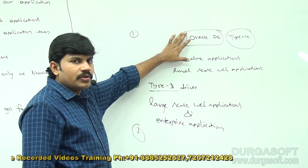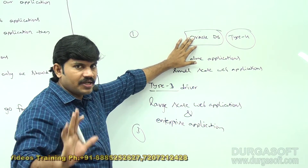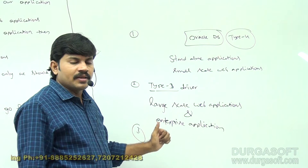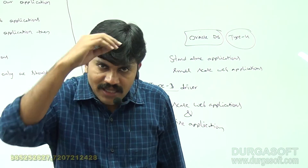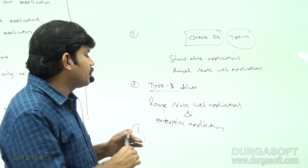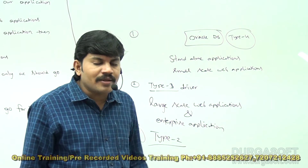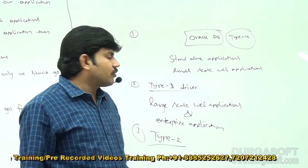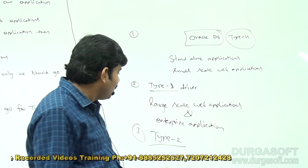So to summarize: if we are using only one type of database, type 4 driver is recommended. If we are using multiple databases, better to go for type 3 driver. Now suppose for my database neither type 3 nor type 4 driver is available — then we should automatically go for type 2 driver. We choose type 2 only when type 4 and type 3 are not available, because if no good driver is there, we have to satisfy with the existing driver.